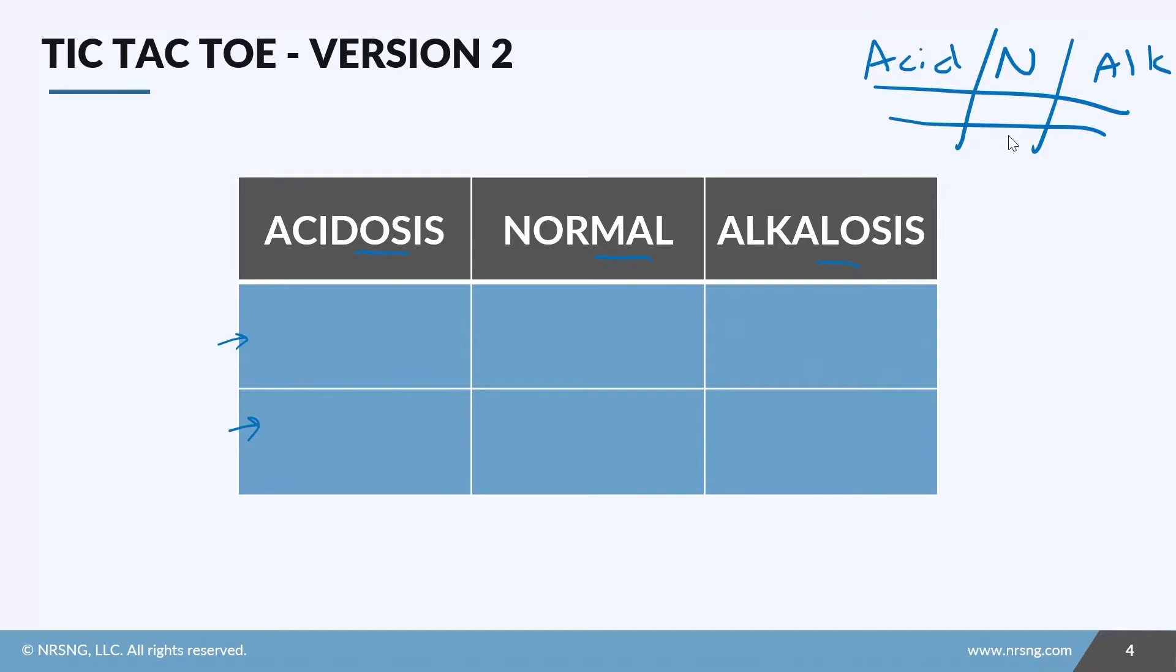And as you do all of this interpretation, you're going to place each value in the box it corresponds to. So if your pH is acidotic and your PaCO2 is acidotic and your bicarb is normal, then you just write them in the boxes they go in. And then if you have two that match in one column, you automatically know that that's your source just by looking at it. So step two takes basically no thought. This is a respiratory acidosis.